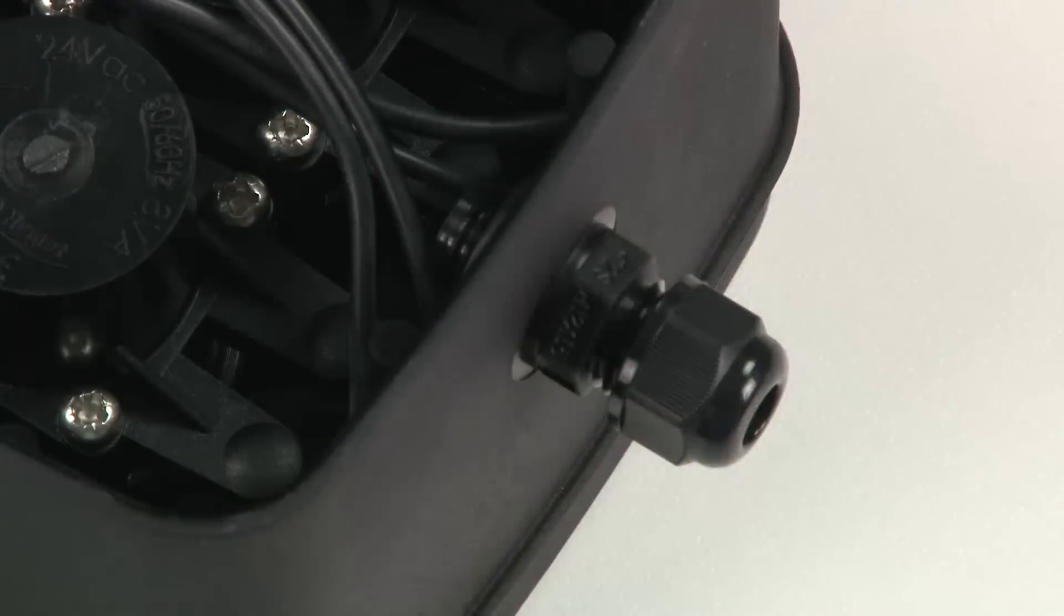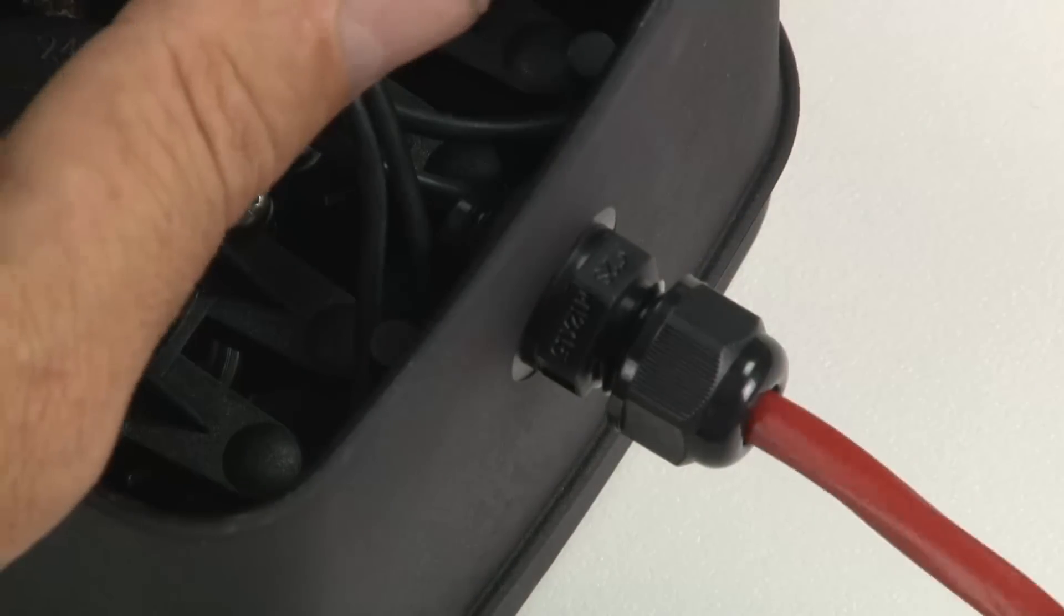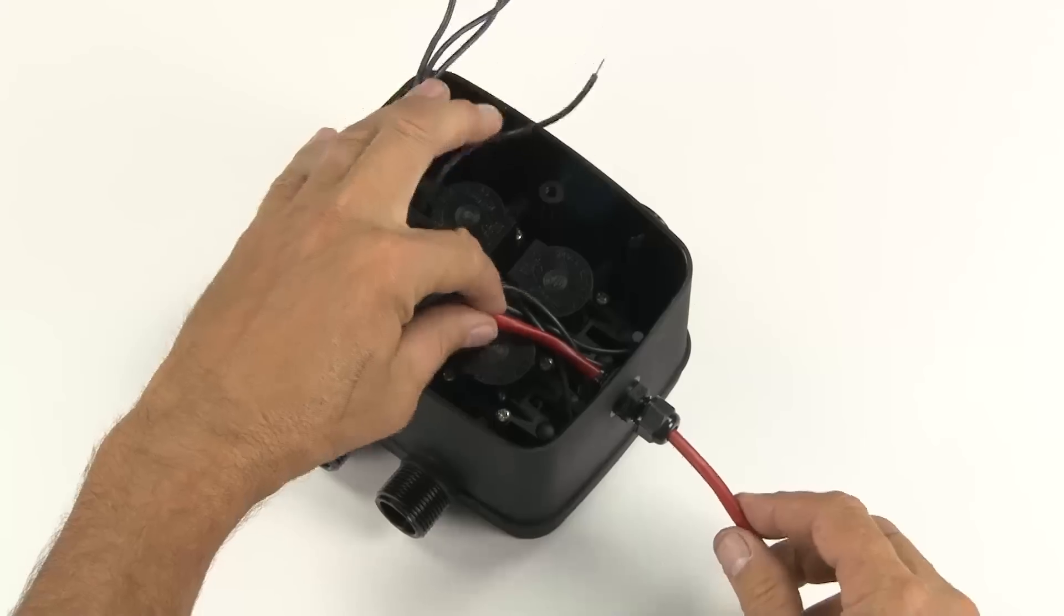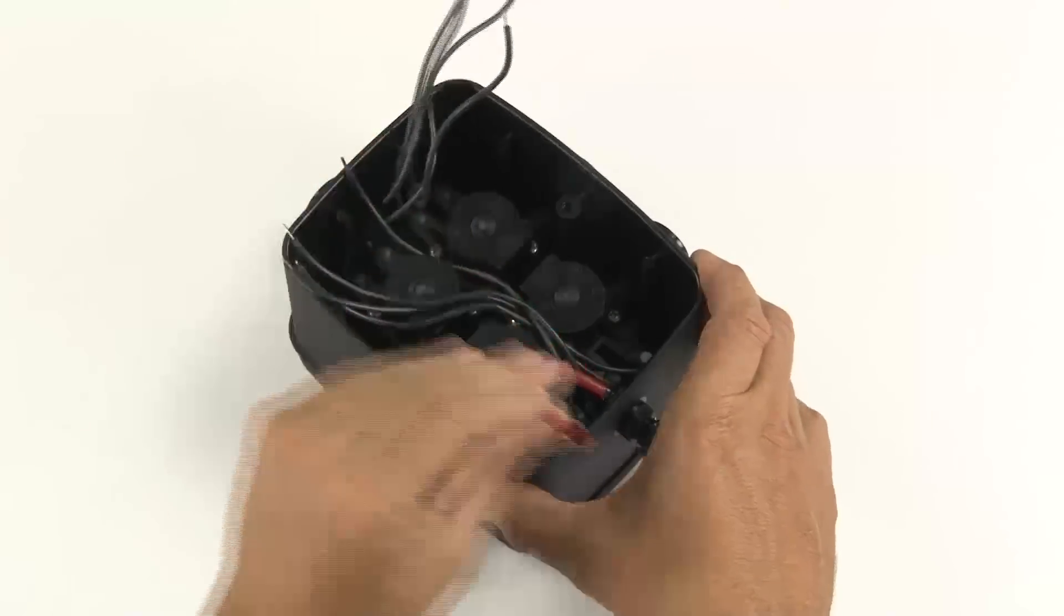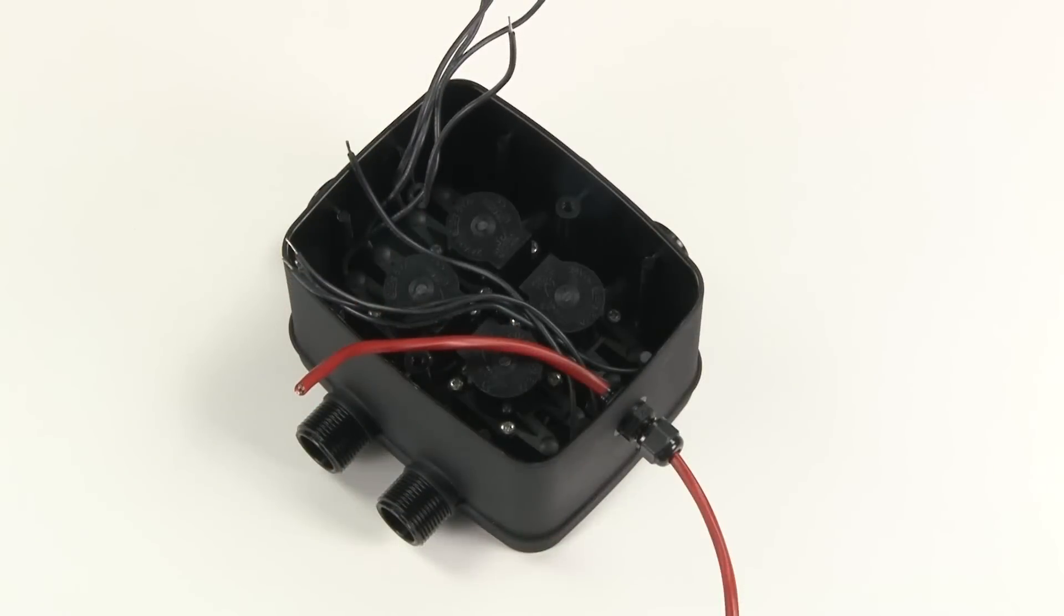Then loosen the large nut on the outside of the box and push through your irrigation cable. Allow enough cable to work with. You can pull the excess back through the gland when you've connected your solenoids.